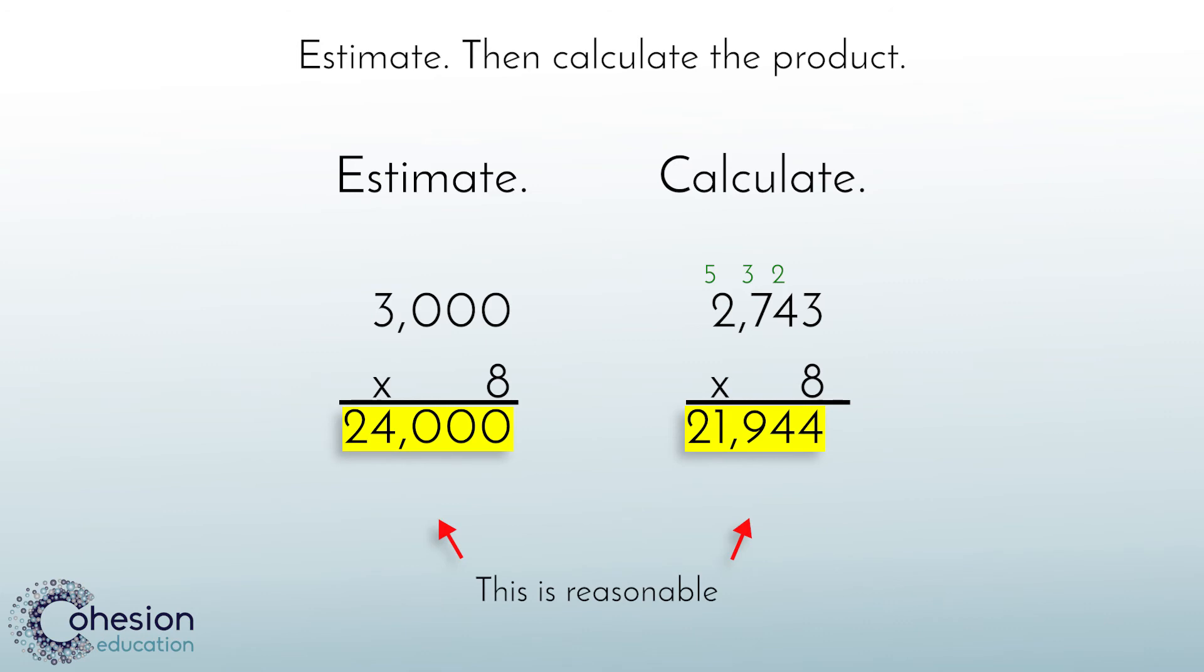It may seem like 24,000 and 21,944 are far from one another, but the larger the numbers you are working with, a larger span from the estimate to the actual answer is to be expected. Because we are working in the ten thousands, this proves our answer is reasonable.